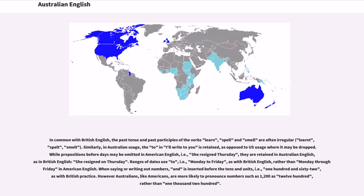In common with British English, the past tense and past participles of the verbs learn, spell and smell are often irregular: learnt, spelt, smelt. Similarly, in Australian usage, the to in I'll write to you is retained, as opposed to US usage where it may be dropped. While prepositions before days may be omitted in American English, that is, she resigned Thursday, they are retained in Australian English, as in British English, she resigned on Thursday.